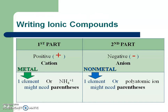I like my charts, so I always think of a compound as two parts: the first part and the second part. The first part is always the positive cation — always going to be a metal, or it could be ammonium. If you have ammonium, you might need parentheses since you could have more than one. The second part is always negative — it's going to be a non-metal or a polyatomic ion, and you may need those parentheses.